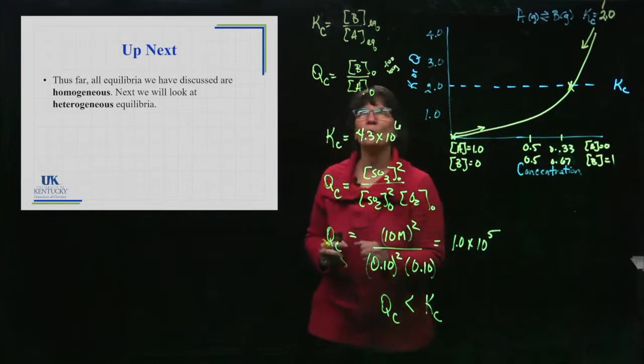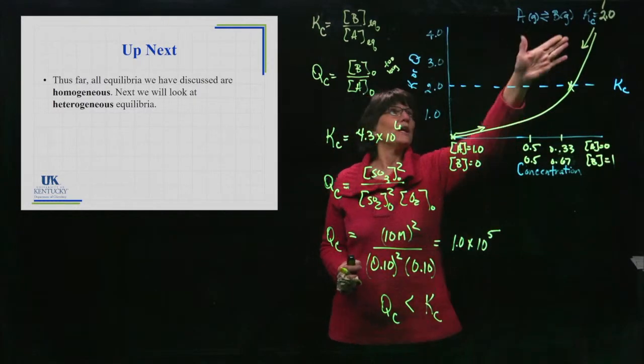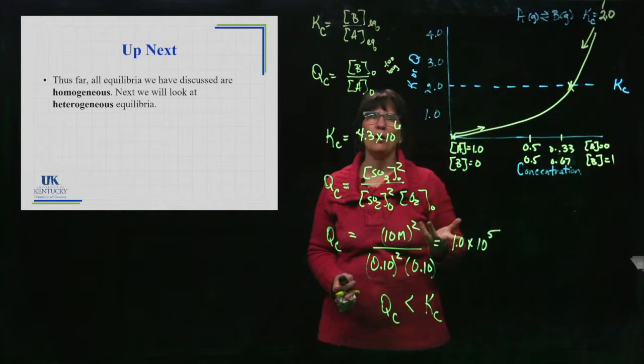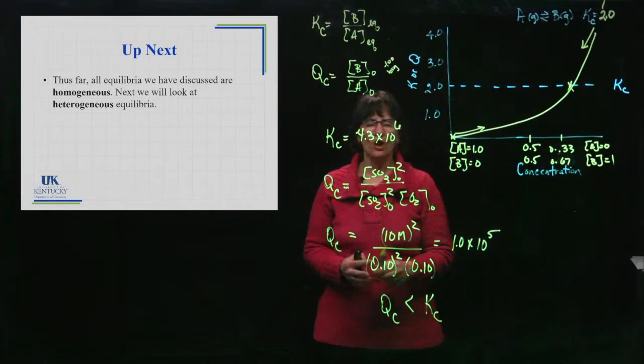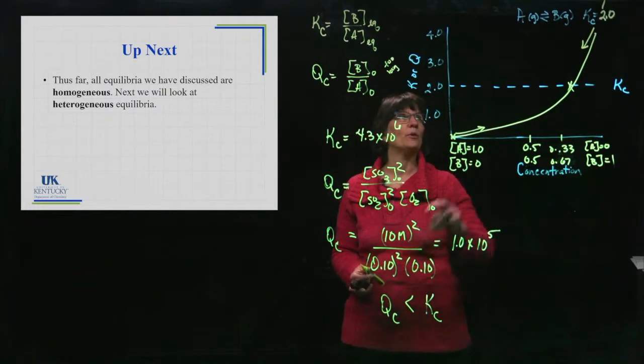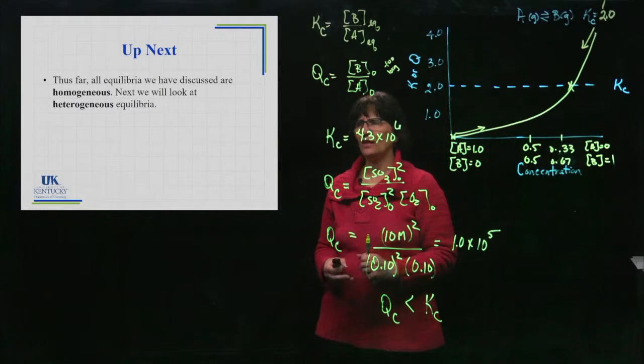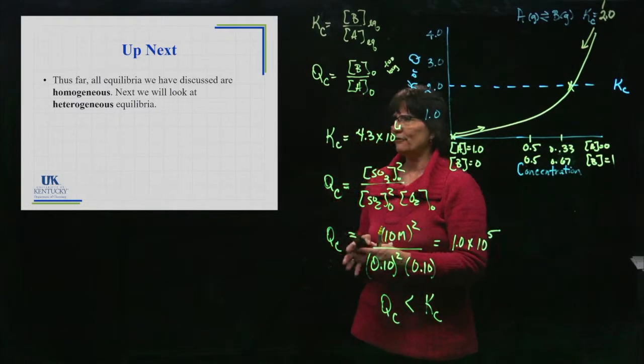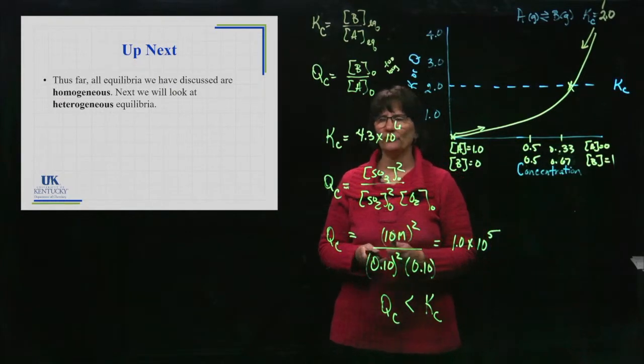All right. Now, every example that we have done so far, everything's in the same state. There have either been gases, actually I think all my examples have been gases, but they could be aqueous as well. Those are called homogeneous equilibrium, where everything is in the same state. What we're going to do next is see, well, what do we do if we've got things in different states? They're not all gases or aqueous.